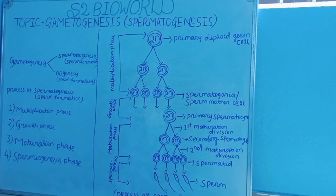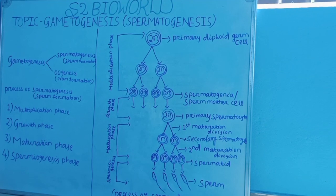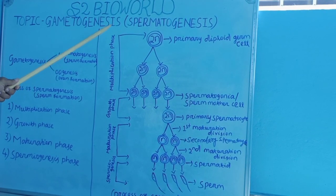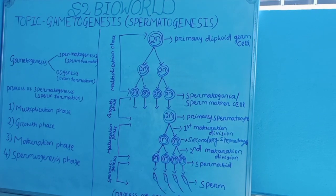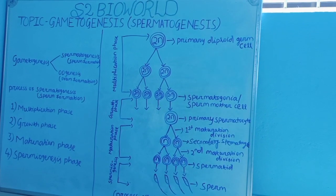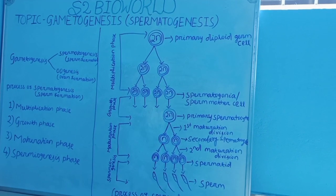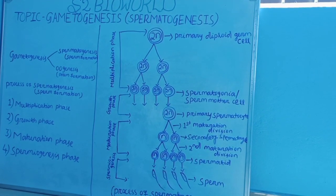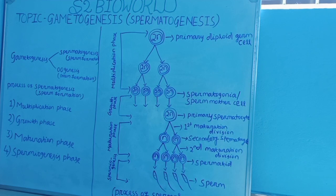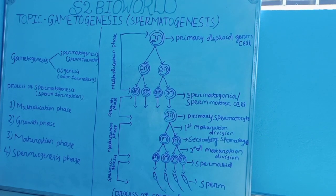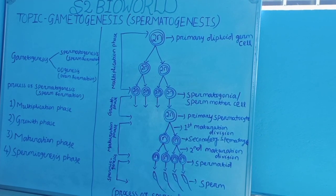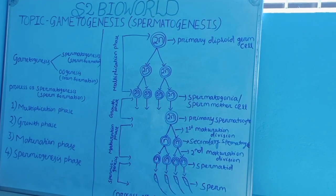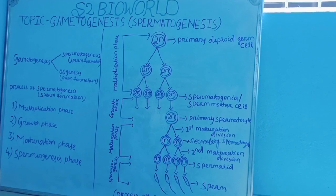Welcome to S2 BioWalk YouTube channel. Today the topic is Gametogenesis, particularly Spermatogenesis. Gametogenesis is the process of origin, development and maturation of gametes — that means male gametes sperm and female gametes ovum — inside the testis of male and ovary of female.